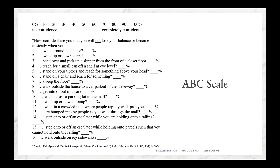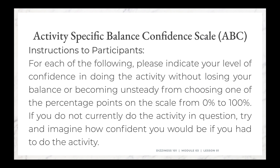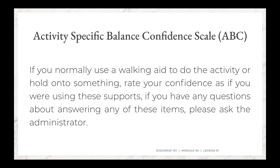All these tasks have varying degrees of difficulty and the person fills it out. The specific instructions you tell them beforehand are: 'For each of the following, please indicate your level of confidence in doing the activity without losing your balance or becoming unsteady, by choosing a percentage from the scale of 0 to 100%. If you do not currently do the activity, try and imagine how confident you would be. If you normally use a walking aid or hold on to something, rate your confidence as if you are using those supports. If you have any questions, please speak to the administrator.'